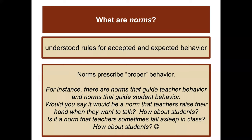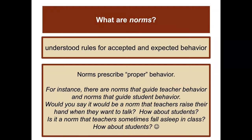What are norms? Norms are understood rules for accepted and expected behavior — they describe what we think of as proper behavior. For instance, there are norms that guide teacher behavior and norms that guide student behavior. Would it be the norm for a teacher to raise their hand when they want to talk? Probably not. Students? More likely. Is it a norm that teachers fall asleep in class? Not usually, although it may sometimes happen with students.